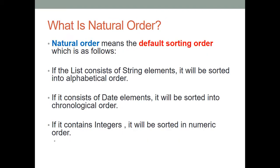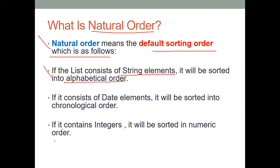What is natural order? Natural order means alphabetical order — A, B, C, D, and so on — or natural numbers like 1, 2, 3, 4, 5. Natural order is the default sorting order. If the list consists of String elements, it will be sorted in alphabetical order. If it consists of Date elements, it will be sorted in chronological order. If it consists of integers, it will be sorted in numeric order: 1, 2, 3, 4, 5.